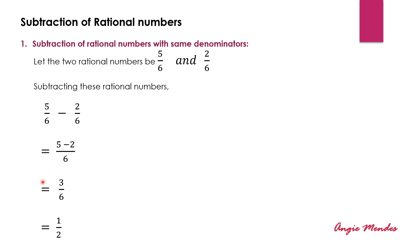This rational number can further be reduced using the 3 times table. We get 3 ones and 3 twos, so we get 1 upon 2.